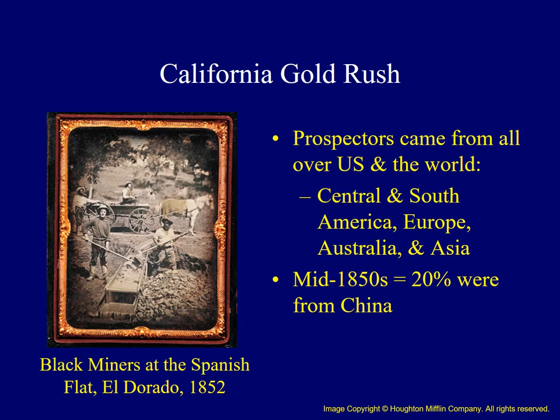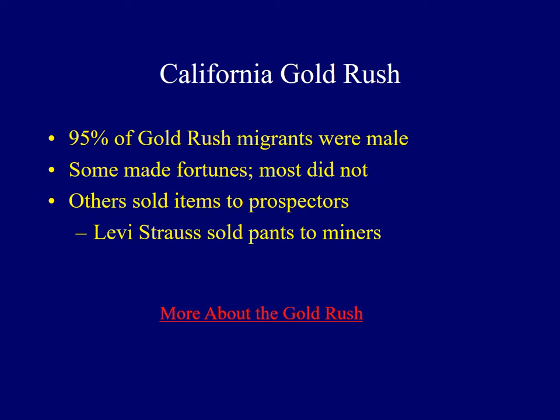California became a meeting ground for people from all over the world. Prospectors came from America's East Coast and Midwest, but also from Mexico, Chile, Peru, Europe, Hawaii, Australia, and Asia. By the mid-1850s, about 20% of the miners were Chinese. Migration to California's gold fields was overwhelmingly undertaken by men — about 95% of the gold rush migrants were male. Some struck it rich, but most did not. There was money to be made selling items to prospectors, including a German migrant named Levi Strauss, whose tough mining pants were popular items.